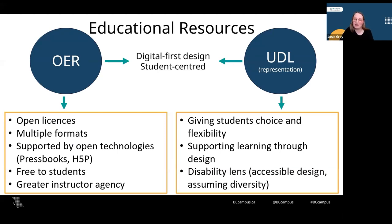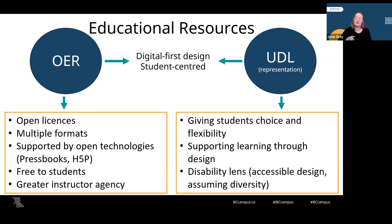Now that I've given some background about OER and UDL's principle of multiple means of representation, I wanted to look at them side by side. They have two things in common: they both encourage a digital first design, and they are both centered on students. For OER, distinguishing characteristics include open licenses, multiple formats, support by open technologies like Pressbooks and H5P, being free to students, and greater instructor agency. For UDL, distinguishing characteristics include giving students choice and flexibility, supporting learning through design, and a disability lens — accessible design and assuming diversity. When using UDL and OER together, I believe they make each other stronger, either by filling in gaps not addressed by the other or by enabling practices encouraged by the other.